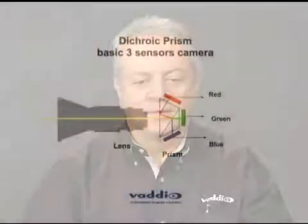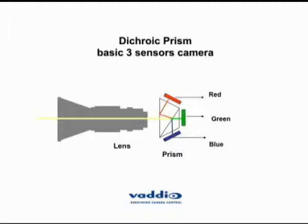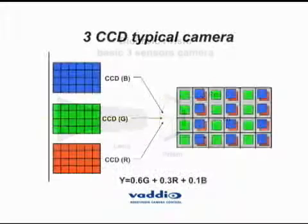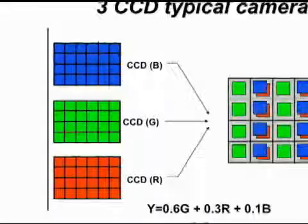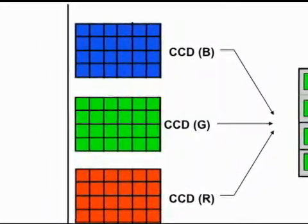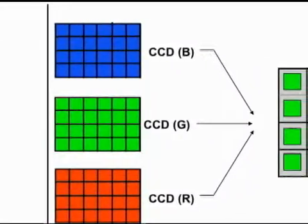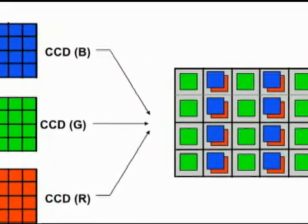The most popular method used in cameras today for three CCDs or three CMOS is prism separation into the three basic colors — red, green, and blue. The light goes through the lens, then passes through a specially designed two-piece glass prism, and the light is separated into red, green, and blue components. As we see in this slide, the three-CCD typical camera will then superimpose the images on the red, green, and blue, and process these images separately inside the processing circuits.